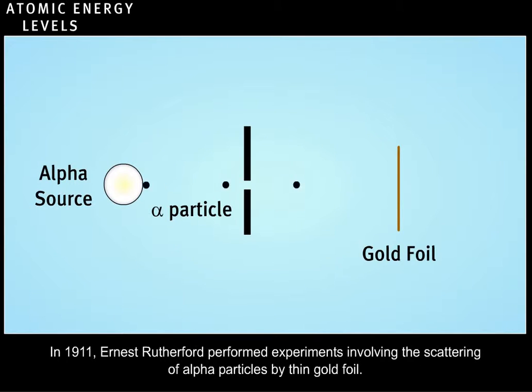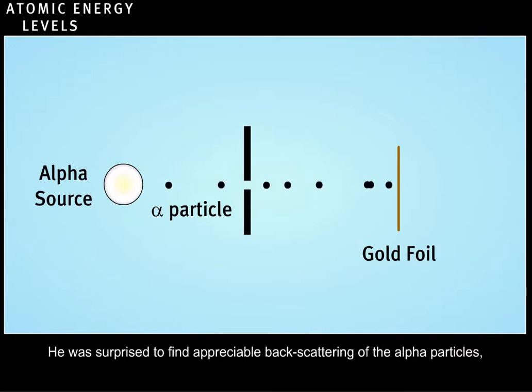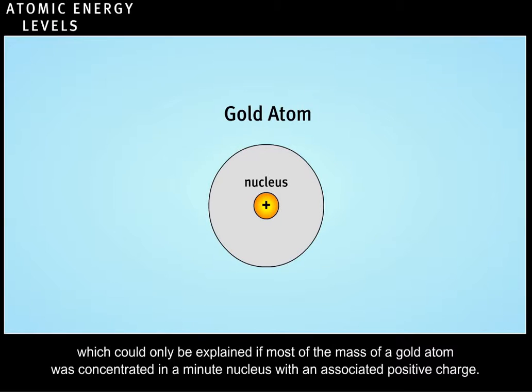In 1911, Ernest Rutherford performed experiments involving the scattering of alpha particles by thin gold foil. He was surprised to find appreciable backscattering of alpha particles, which could only be explained if most of the mass of a gold atom was concentrated in a minute nucleus with an associated positive charge.